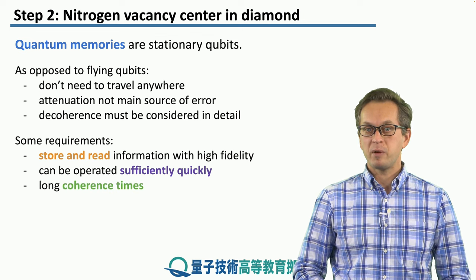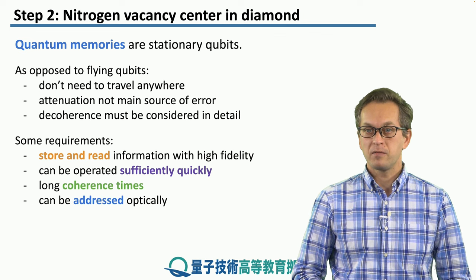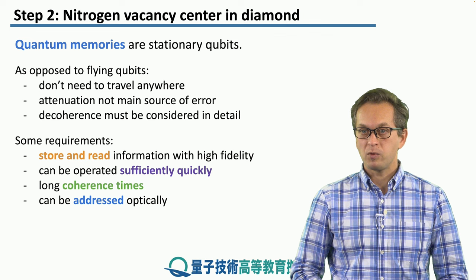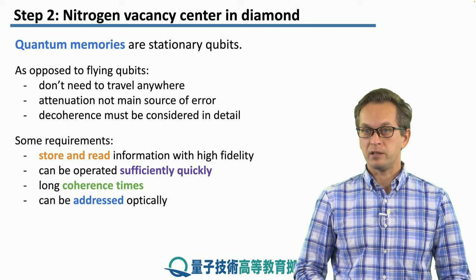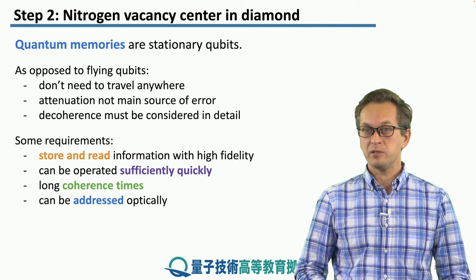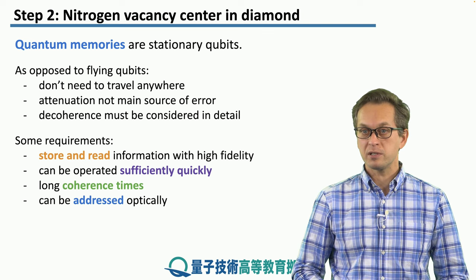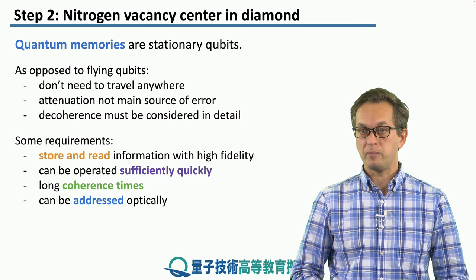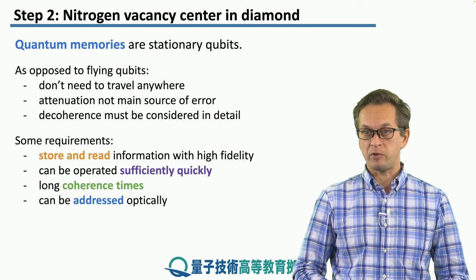The memory should keep its coherence for a very, very long time. Furthermore, we would like it to be addressed optically. What this means is that the memory can interact with electromagnetic degrees of freedom. It can produce photons, which we can then collect into fibers, and interfere at the beam splitters and perform Bell-state measurements in order to entangle separated memories.